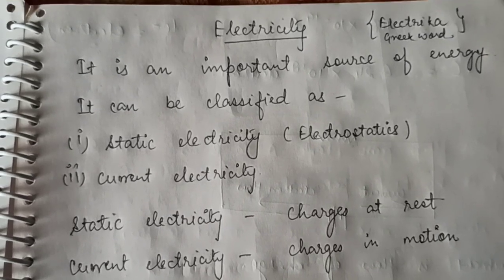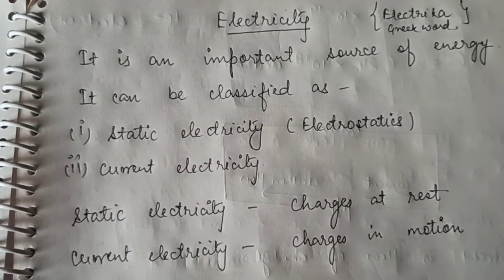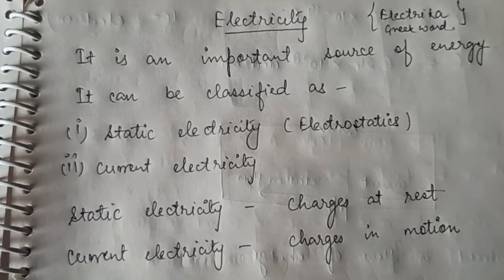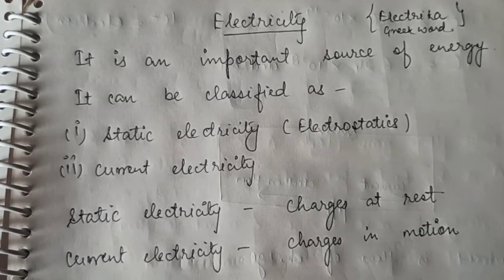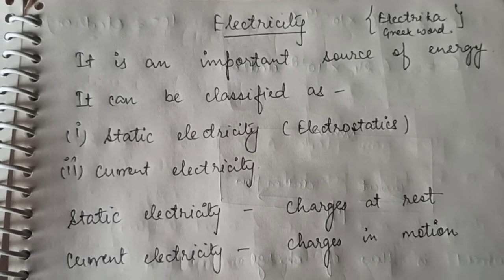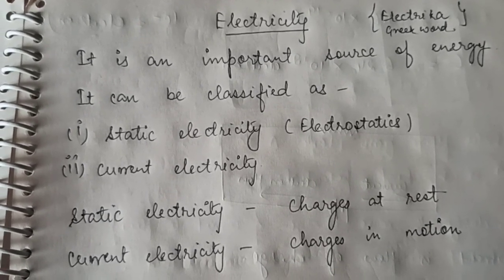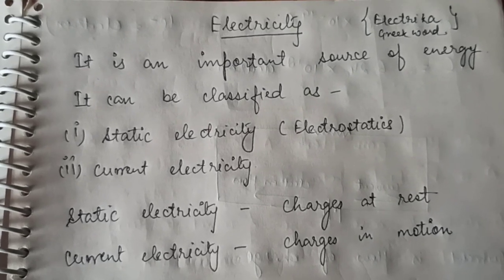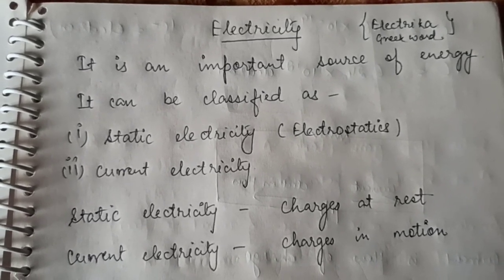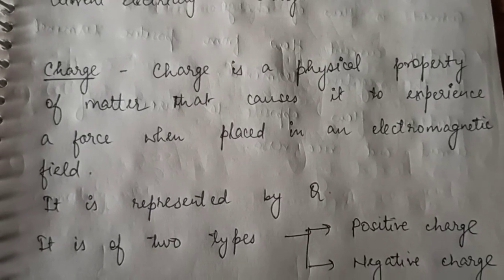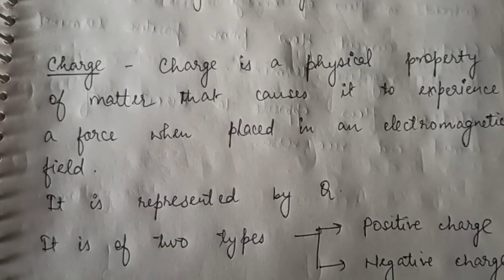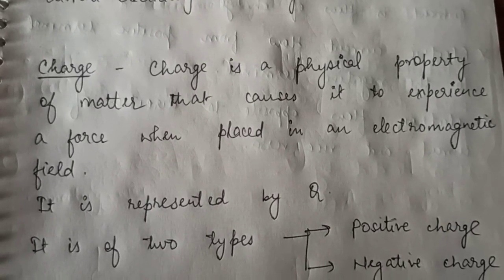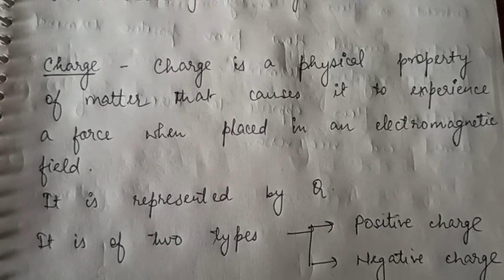Electricity can be classified as static electricity, or electrostatics, and current electricity. Static means rest, so static electricity is the study of charges at rest. And in current electricity we study charges in motion. What is charge? Charge is a physical property of matter that causes it to experience a force when placed in an electromagnetic field.